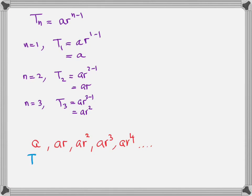Look at the following terms: T1, T2, T3, T4, T5. When the value of n is 5, the power of r is 4. When the value of n is 4, the power of r is 3. So it's always one less.